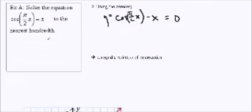The other way that we can do it is we can graph y equals cos π over 2x and y equals x, and find the points of intersection between these two. So those are our two techniques to find it.